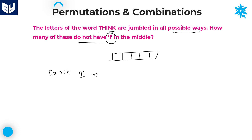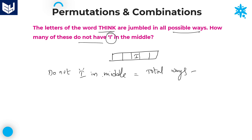The condition 'i should not be in the middle' is equivalent to: total possible ways minus the number of words where i is in the middle position. If you subtract the arrangements where i is in the middle from the total arrangements, you get the arrangements where i is not in the middle.